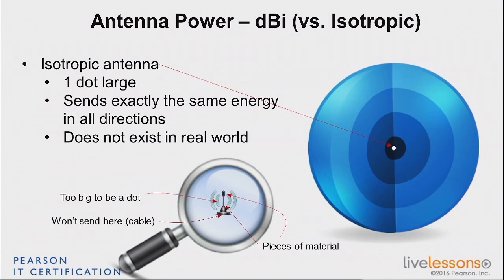It doesn't matter, because what we want to do is compare things to a reference. That allows you to say: if that antenna is this much compared to the isotropic, and this one is that much compared to the isotropic, then I can compare these two antennas together — and that's all that matters.